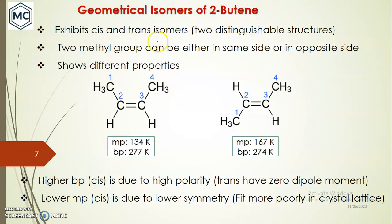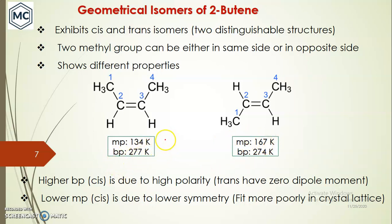Geometrical isomers of 2-butene: it exhibits two geometrical isomers in cis and trans form. These are two distinguishable structures — in one case the two methyl groups are on the same side, and in the trans case they are on opposite sides. Since they are two different distinguishable structures, they show different physical properties.